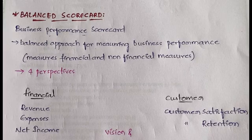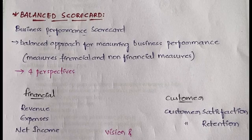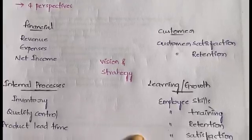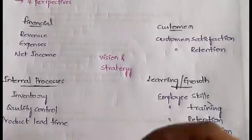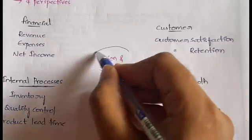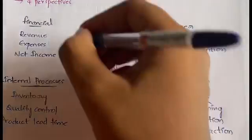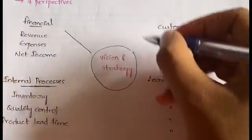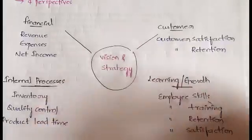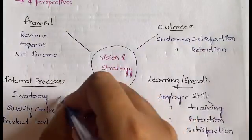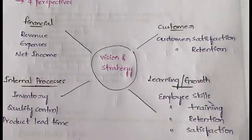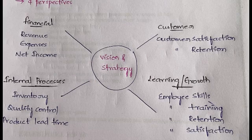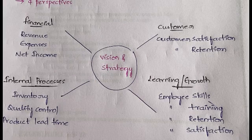In the Balanced Scorecard we have four perspectives. In the middle you have Vision and Strategy, and surrounding it are: Financial, Customer, Learning and Growth, and Internal Process — these are the four perspectives.